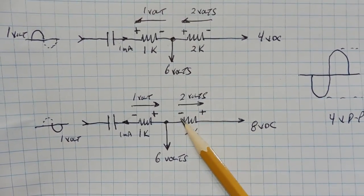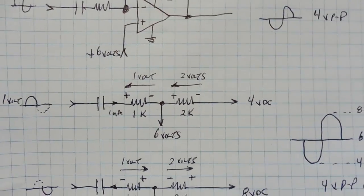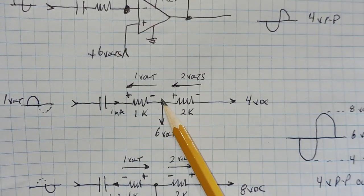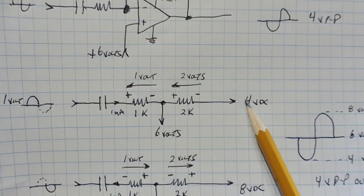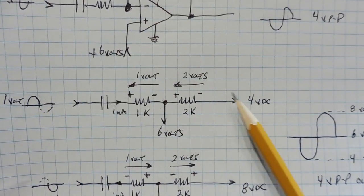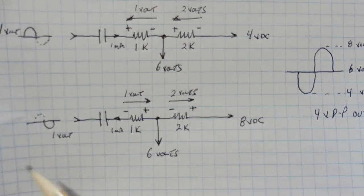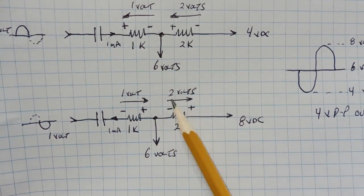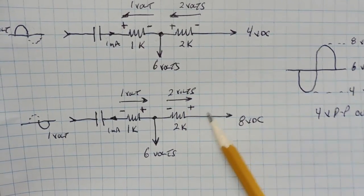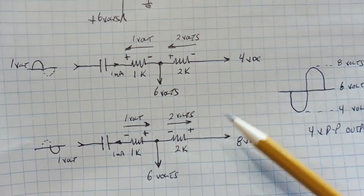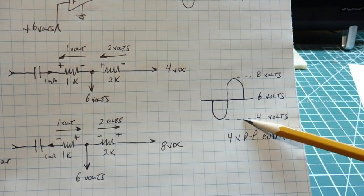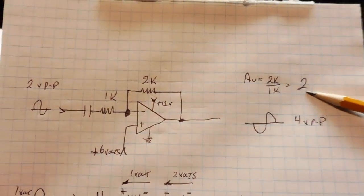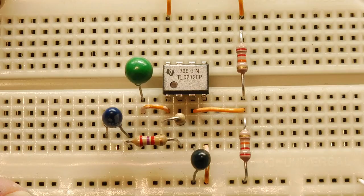Starting from 7 volts on the positive swing, going against the arrow drops 1 volt to 6, then another 2 volts to 4 volts at the output. On the negative swing, starting from 5 volts and going with the arrows adds 1 volt to 6, then 2 more volts to 8 volts. So positive swing gives 4 volts and negative swing gives 8 volts — a 4 volt peak-to-peak output from a 2 volt peak-to-peak input, confirming a gain of 2.